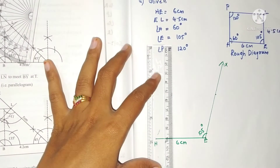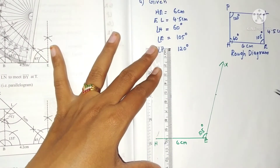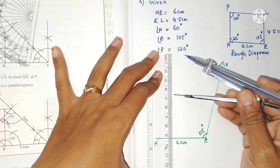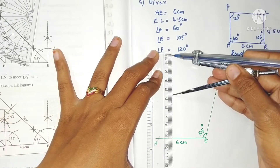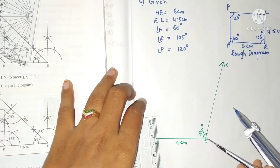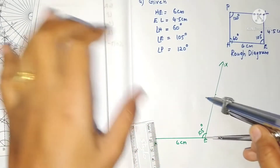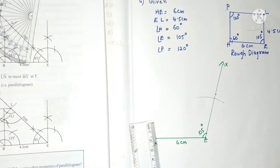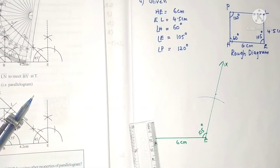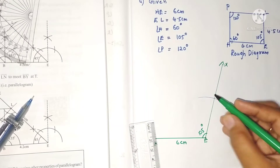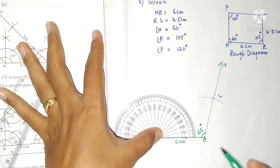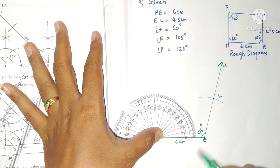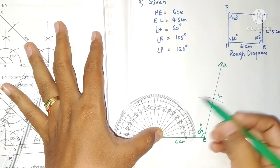Now take the scale and measure 4.5 centimeters. With E as center, draw an arc. The intersecting point of this arc and the ray is vertex L. Now we have angle H equal to 60 degrees.